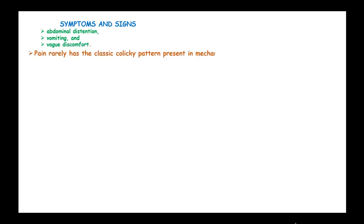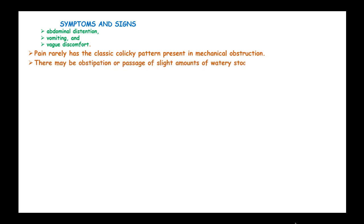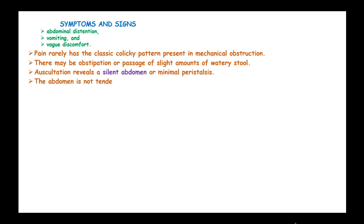The symptoms of paralytic ileus include abdominal distension, vomiting, and vague discomfort. Pain rarely has the classic colicky character present in mechanical obstruction, and there may be obstipation or passage of small amounts of watery stool. Auscultation reveals a silent abdomen or minimal peristalsis, and the abdomen is not tender unless the underlying cause is inflammatory.